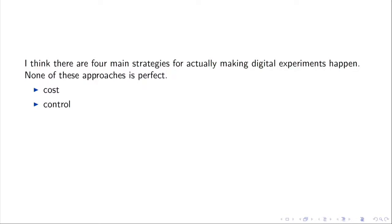Control, meaning the amount that you can use the treatments that you want, measure the outcomes that you want, control who is or who is not the participant. Realism is the extent to which the experiment is measuring the effect of some more or less naturally occurring treatment on some more or less naturally occurring behavior, and ethics is ethics.